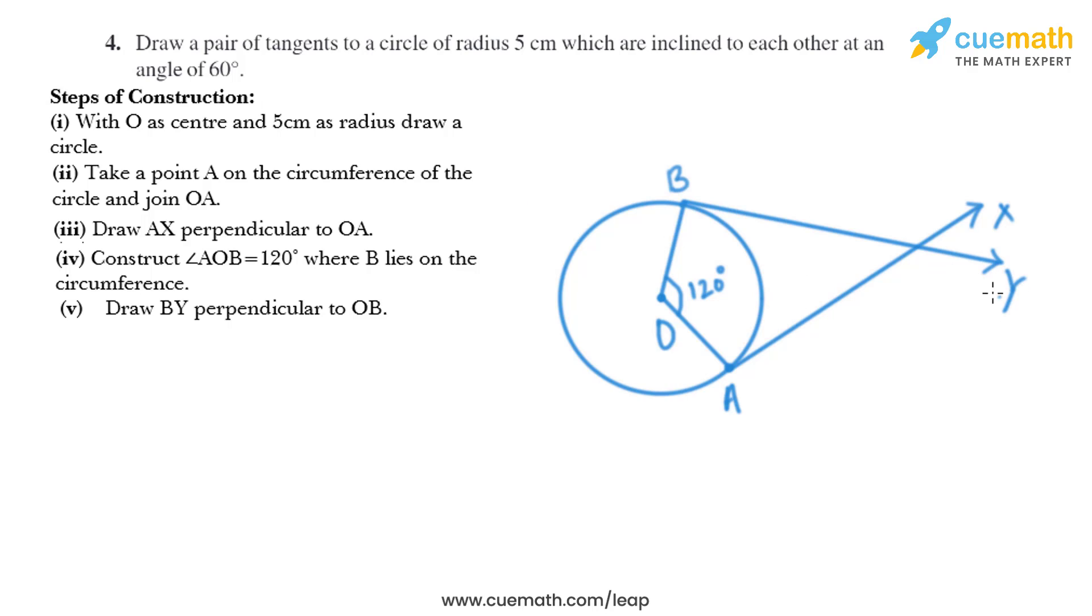Now in the next step, both AX and BY intersect at P. So we have got PA and PB as the required tangents inclined at 60 degrees.